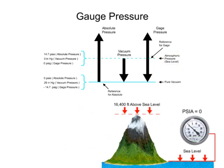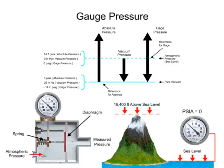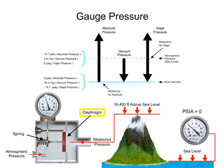Gauge pressure can also be measured with a mechanical diaphragm gauge. Using atmospheric pressure as the reference, the diaphragm bends towards the side with the lowest pressure, which operates the spring that is mechanically linked to the gauge pointer.